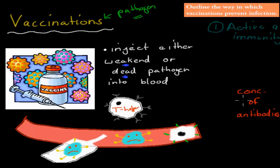Remember, what causes an immune response? It's not necessarily the pathogen itself — it's the antigens on the pathogen. Even though this virus is dead, it still has antigens. So if we put it into the blood, a macrophage will come and find the antigen. The antigens are actually the thing that causes the immune response, not the virus directly.